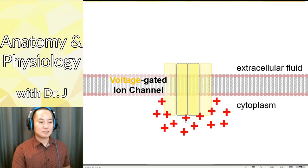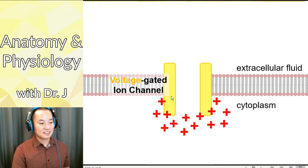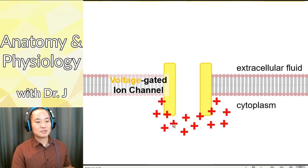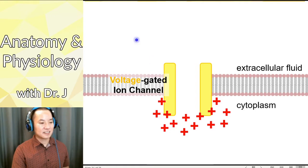This might cause these channels to open, and especially for the sodium-gated ion channels, this causes it to open. So now we have an ion channel that's open due to some change in the ion balance and the voltage between these two sides of a cell or plasma membrane.